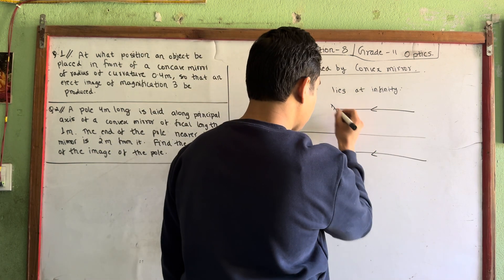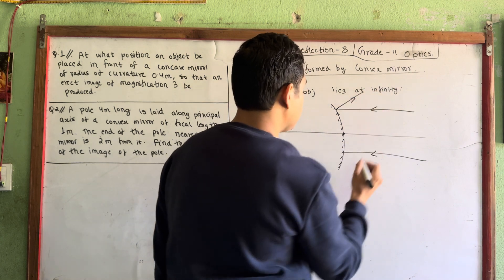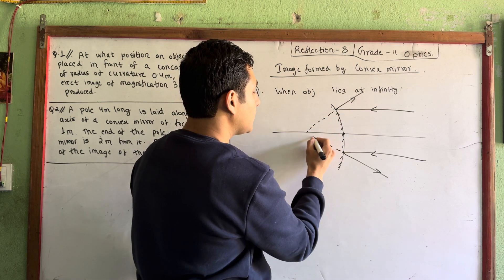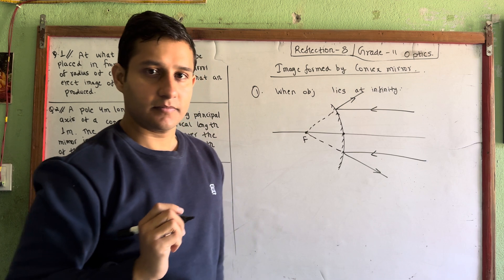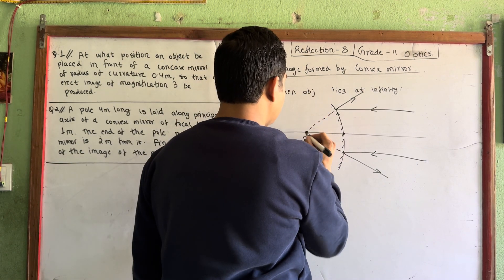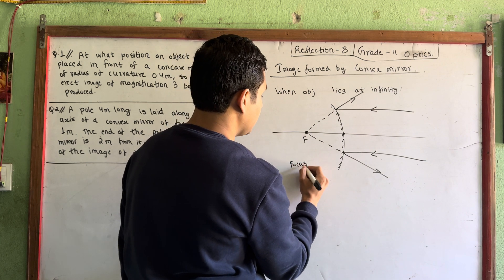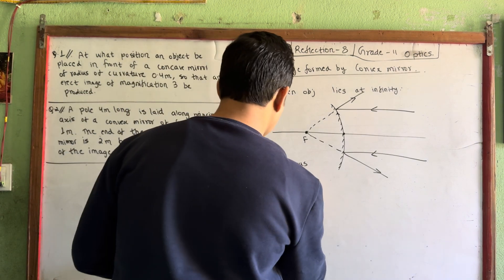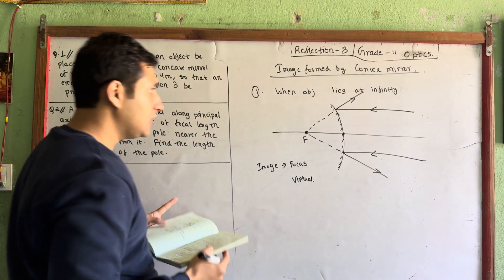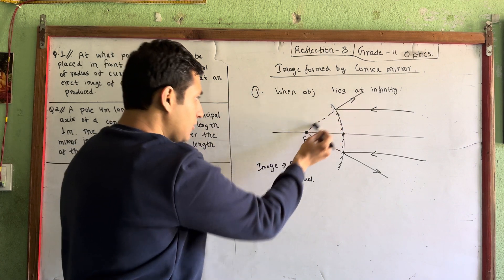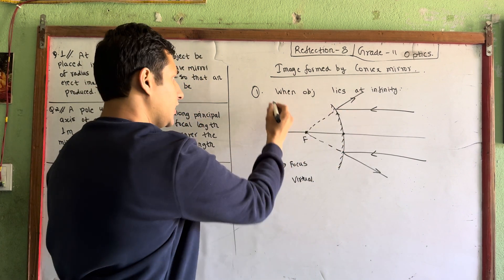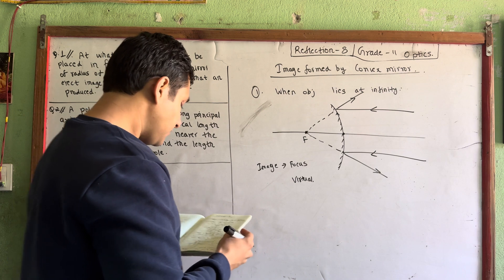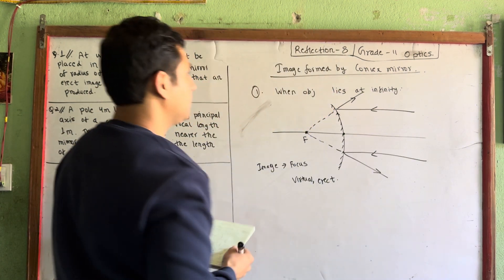The image is formed at the focus. So when the object is at infinity, the image forms at the focus. From this, the first property you can get is that the image is virtual — that is the first property of the convex mirror image.